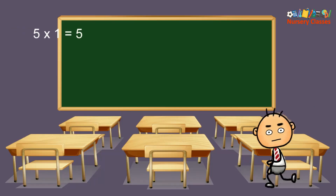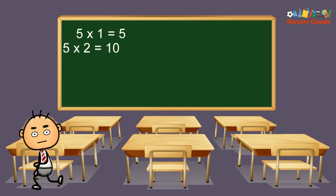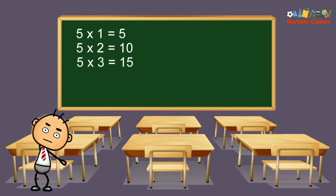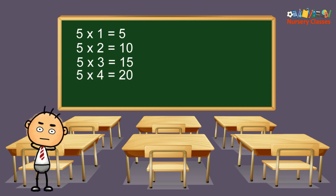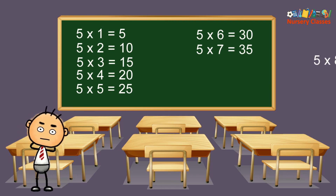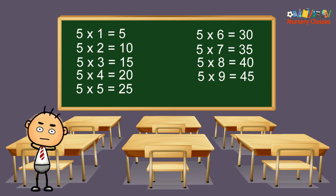5×1 equals 5, 5×2 equals 10, 5×3 equals 15, 5×4 equals 20, 5×5 equals 25, 5×6 equals 30, 5×7 equals 35, 5×8 equals 40, 5×9 equals 45, 5×10 equals 50.